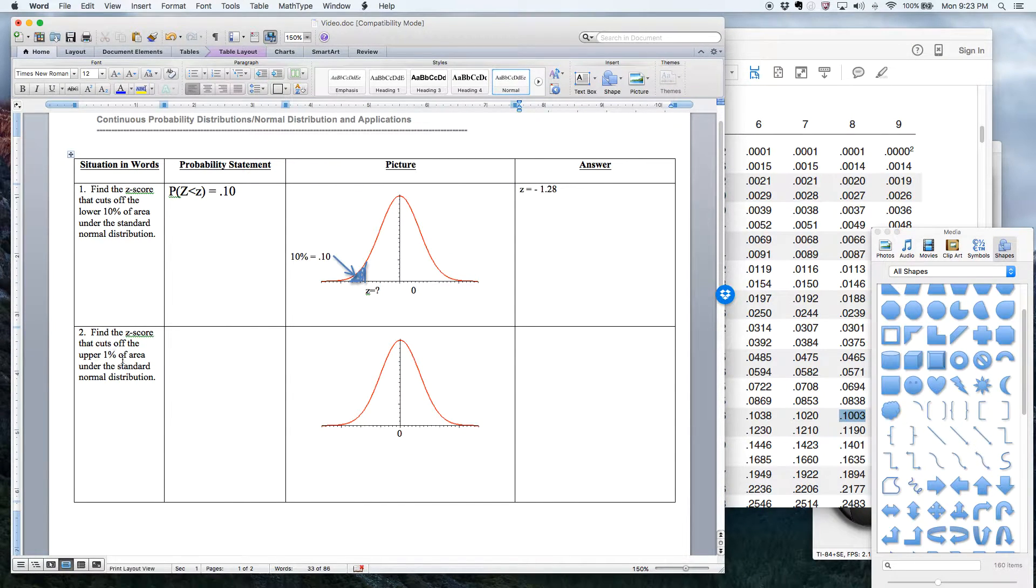Find a z-score that cuts off the upper 1% of area under the normal distribution. All right, so let me go cut that right now. So 1% is this little tiny speck up here, right? It's so small. But I'm going to draw it so that we can see it, because it's just going to be a big old pain in the neck if we don't. So that's why I don't use the calculator to draw these pictures, because what ends up happening is it's really hard to see them.